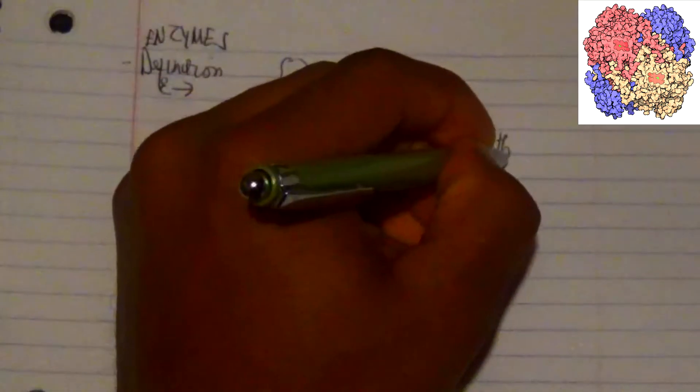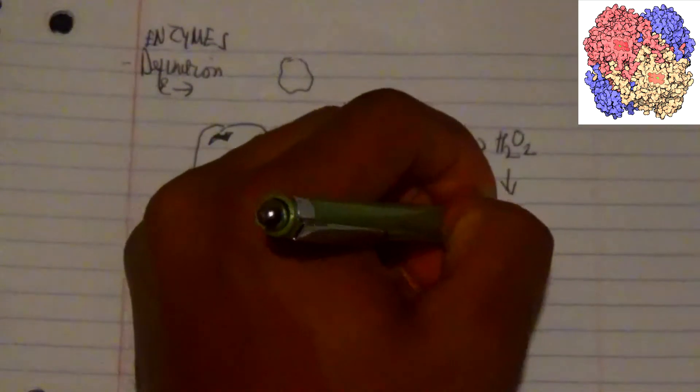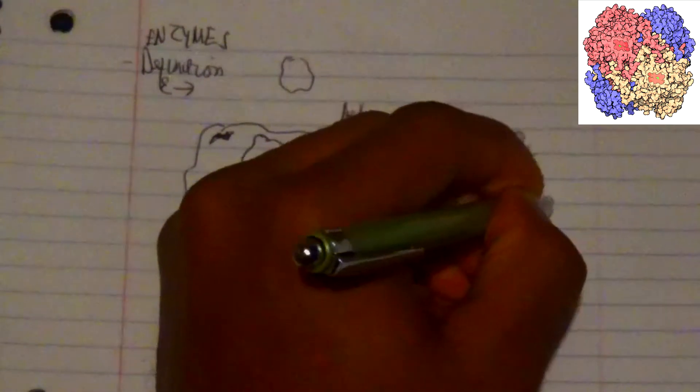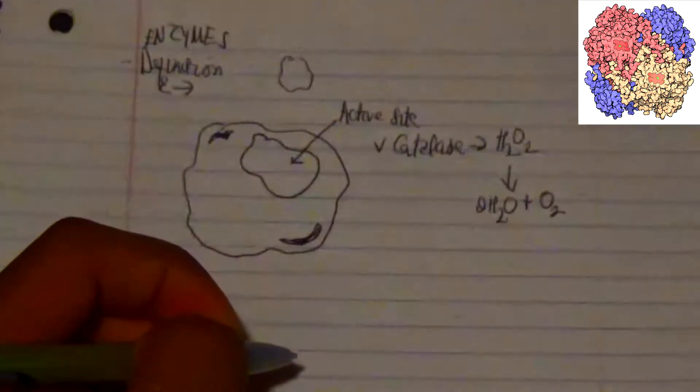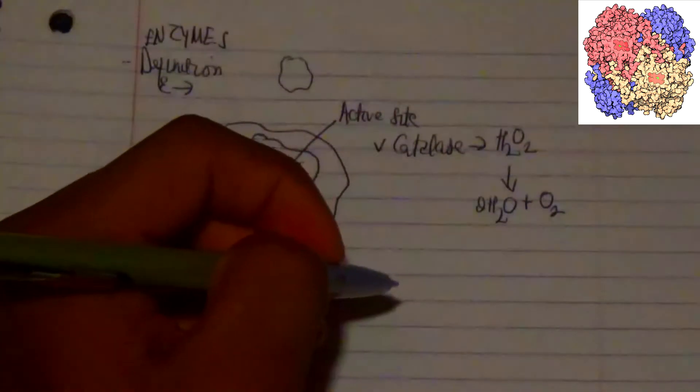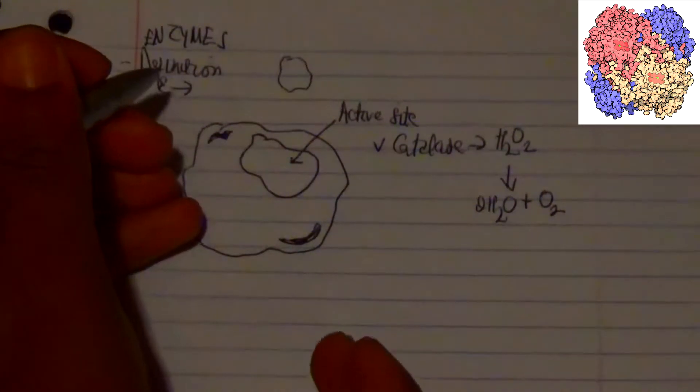Let's take an example of what enzyme does. Catalase is a catalyst, and what the catalyst does is decompose H2O2, which is hydrogen peroxide, into water, H2O, and oxygen. During this particular process, the catalyst exhibits one particular configuration.